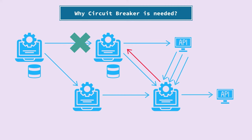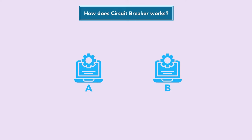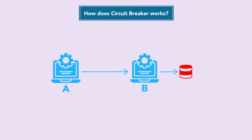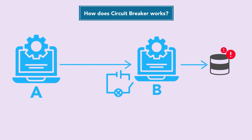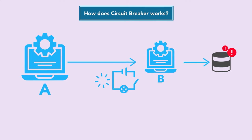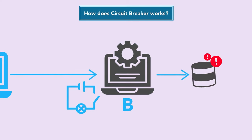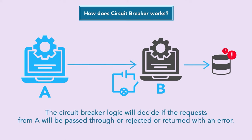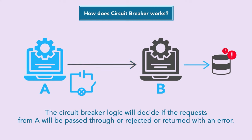Here is a simple example to understand circuit breaker. Let's say there are two services A and B, where B has queries to a database. If that database goes down, a circuit breaker module will decide if service B's health is good enough to serve requests from A. If service B is not responding, the circuit breaker will not allow requests from A to B to go through, preventing service B from degrading further and stopping service A from repeatedly receiving errors.